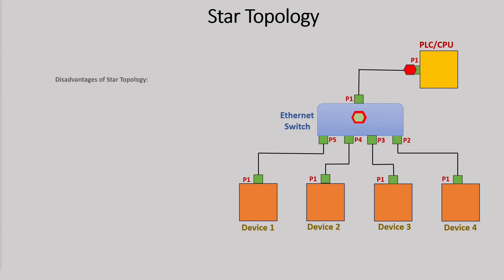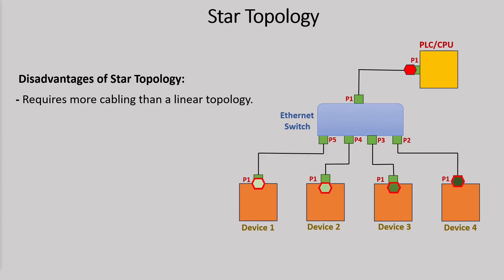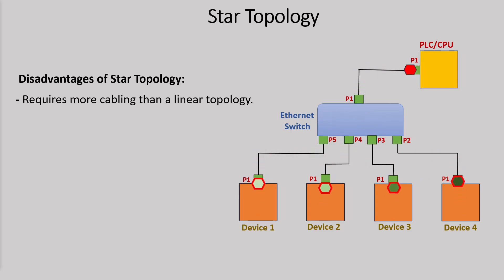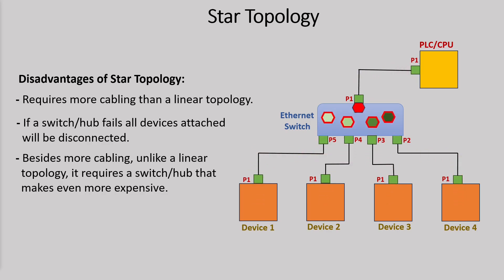The disadvantages of star topology are that it requires more cabling than linear topology. If you have an industrial setup with an Ethernet switch mounted in a cabinet, and a PLC and devices spread across machinery, you have to drag cable from each device back to the Ethernet switch, exposing cables to mechanical damage or electromagnetic noise. Also, if the switch as a central point fails, the whole network fails. And because of the extra cabling and the required Ethernet switch, it adds to the overall cost of the network.